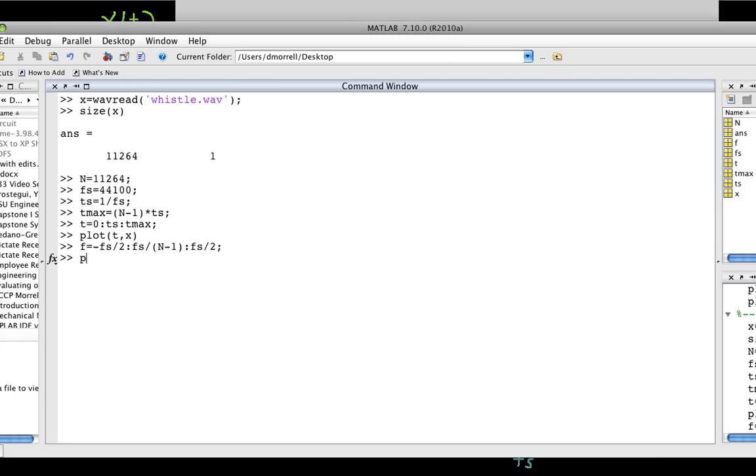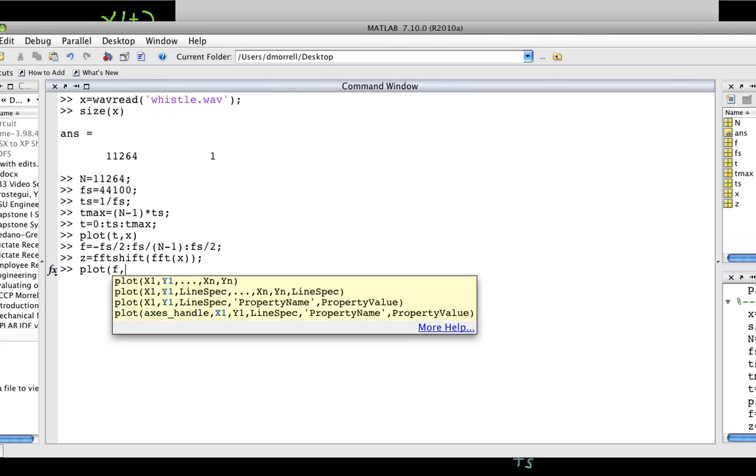And now, we should be able to... Oh! Now, we have to take the Fourier transform, the discrete Fourier transform of x. The way you do this, and I'm not going to spend a lot of time explaining why I do it this way. Is z, I'll call the Fourier transform z, is FFT shift of FFT of x. Okay, so now I can plot Fz.